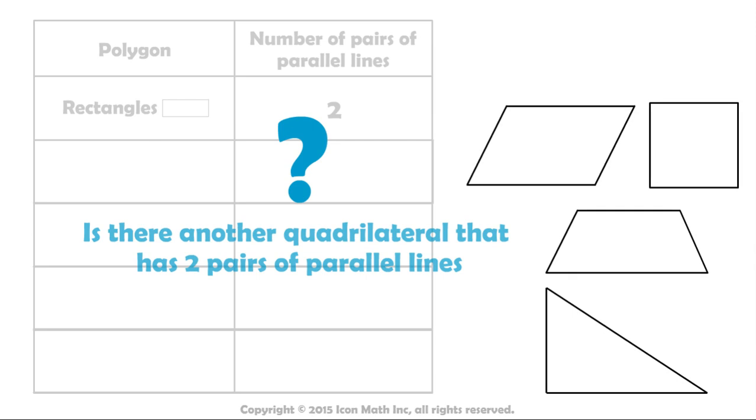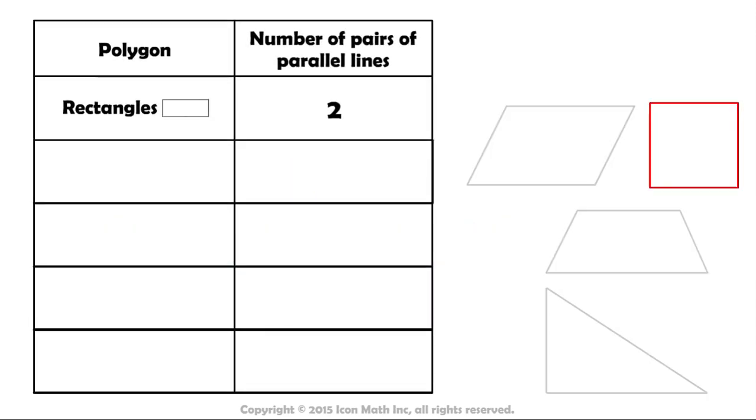Is there another quadrilateral that has two pairs of parallel lines? Yes, there is. Look at this square. It also has two pairs of parallel lines. Here's the first pair, and here's the second. All squares have two pairs of parallel lines.